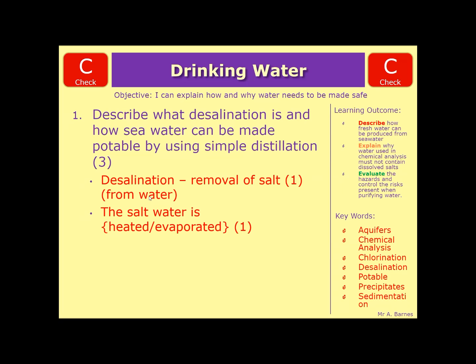So the vapor is collected and condensed. Usually the marks would be one mark for desalination, one mark for heated or evaporated, and then one mark for condensed. Some mark schemes may give you a mark for the water is collected, which could be in the form of a suitable diagram.